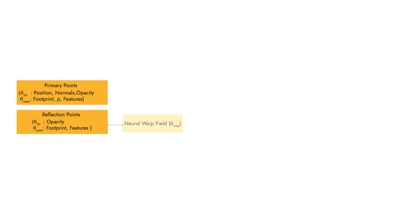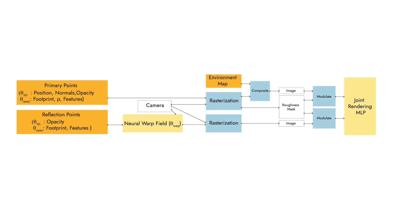Our method recovers a specular point cloud that models reflections and a primary point cloud responsible for the rest of the scene. During rendering, the specular points are warped in space via a neural warp field that models the displacement of specular points as a function of the camera. After this step, we feed everything to a rendering MLP to produce the final image.